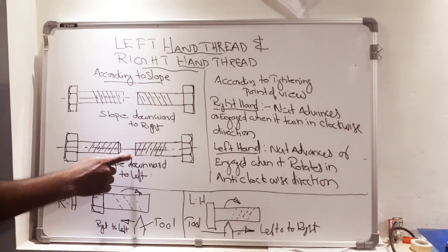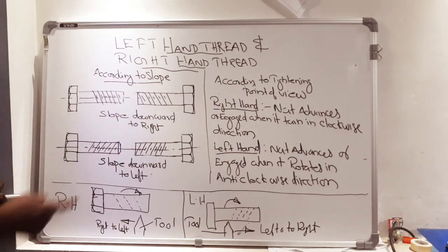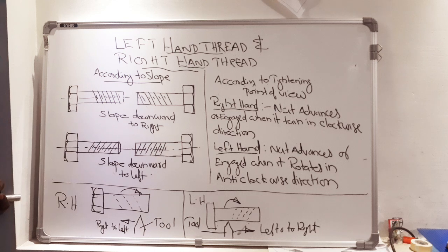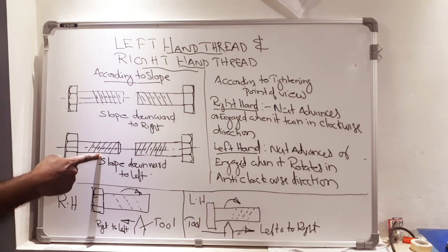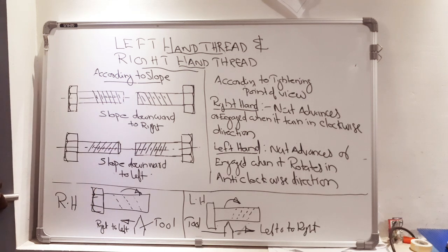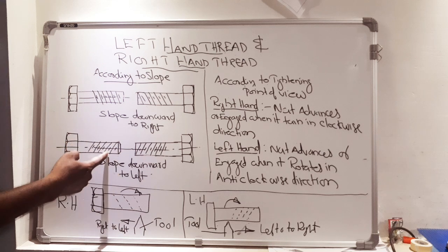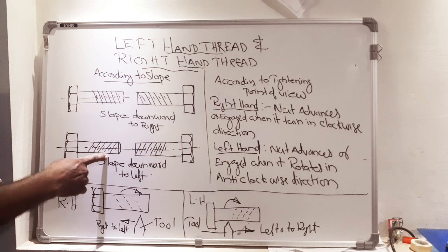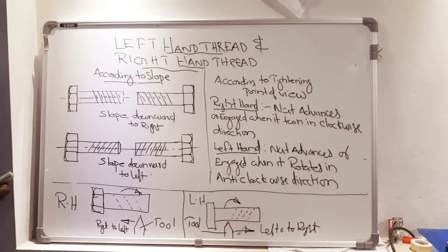The second figure shows the left-hand thread. In this figure, the slope is downward to the left. When the slope is downward to the left, that is called a left-hand thread.